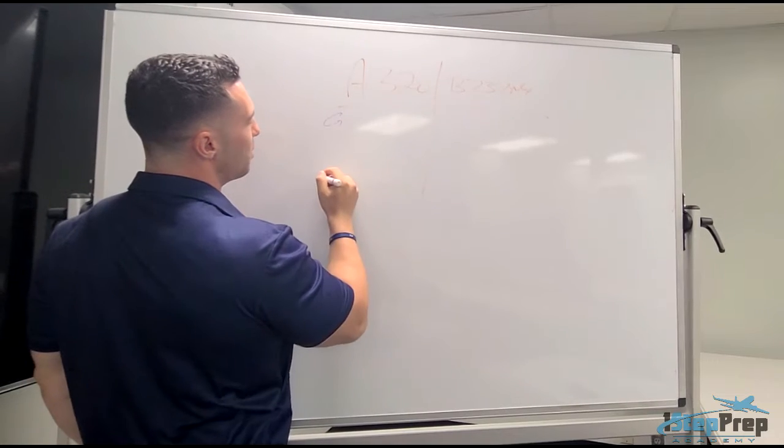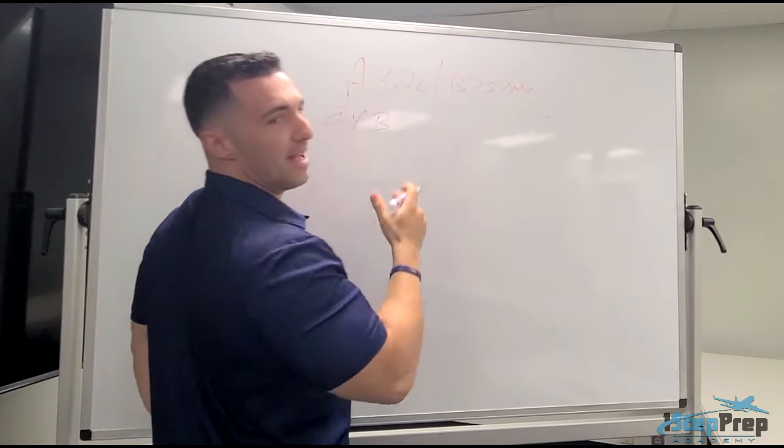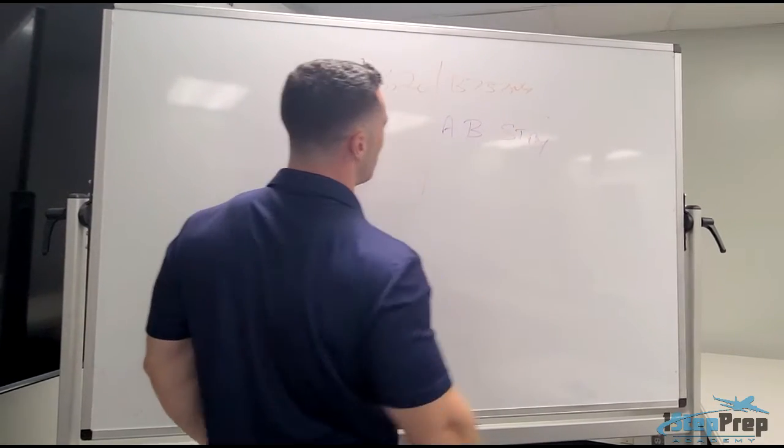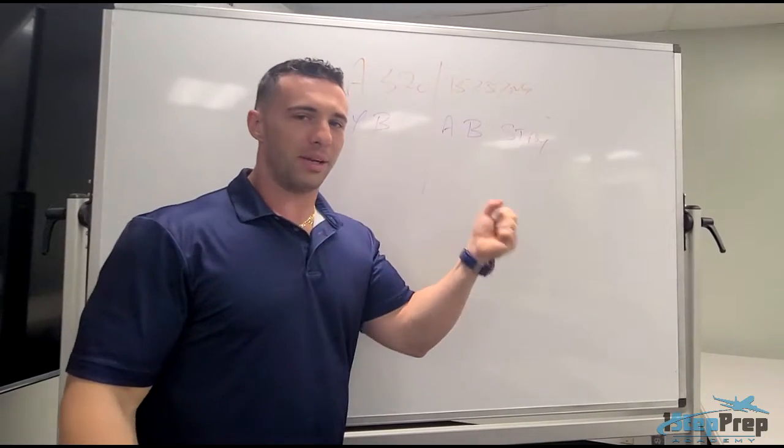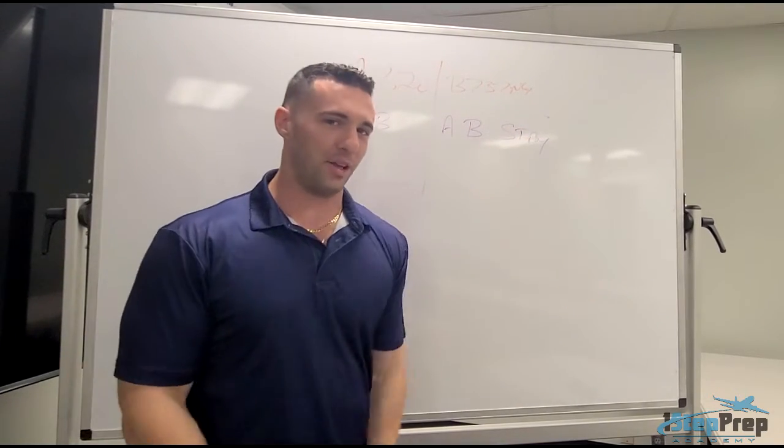The 320's got a green hydraulic system, a yellow, and a blue hydraulic system. The 737 NG, we've got the A system, the B, and the standby. Now, these are pretty similar in that the green and yellow, like the A and B, are the primary dominant systems, and the blue and the standby are the standby systems.